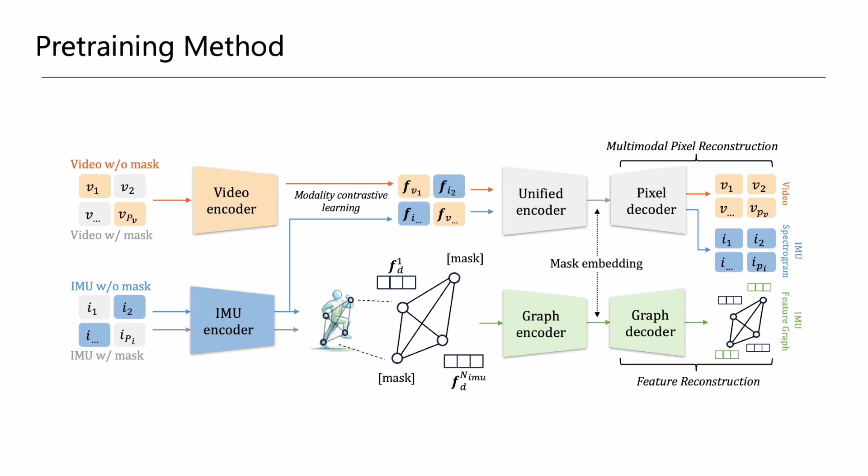Our pre-training network processes video patches and IMU spectrogram patches and incorporates them into two branches: a multimodal pixel reconstruction branch and an IMU feature reconstruction branch.